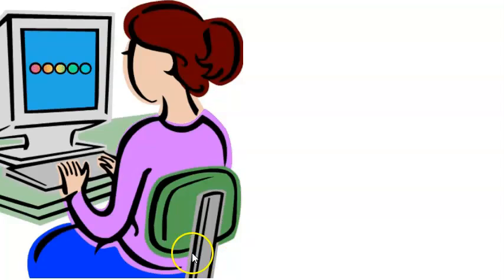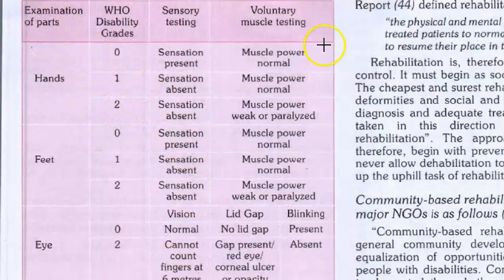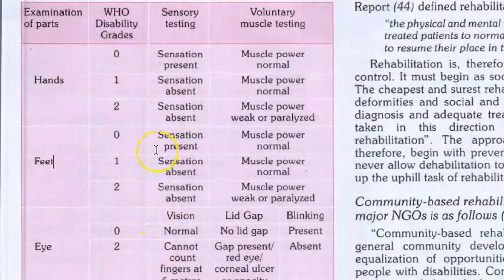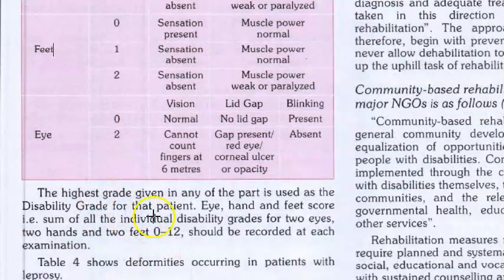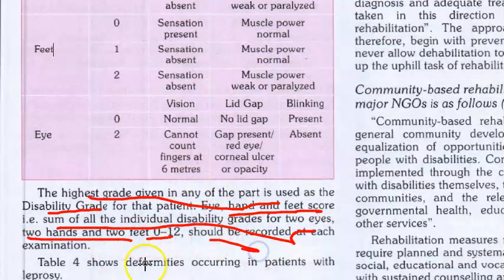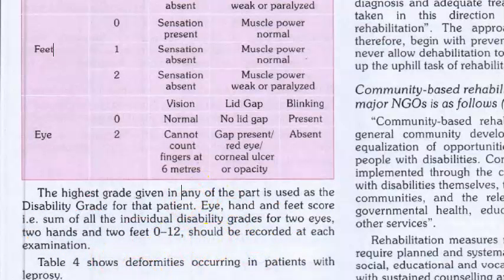The deformities also have a grading system. For the hand: grades 0, 1, 2. For the feet: grades 0, 1, 2. For the eye: grades 0 and 2. The highest grade given in any part is used as the disability grade. The hand-feet score — the sum of all individual disability grades for two eyes, two hands, and two feet — ranges from 0 to 12 and should be recorded at each examination.